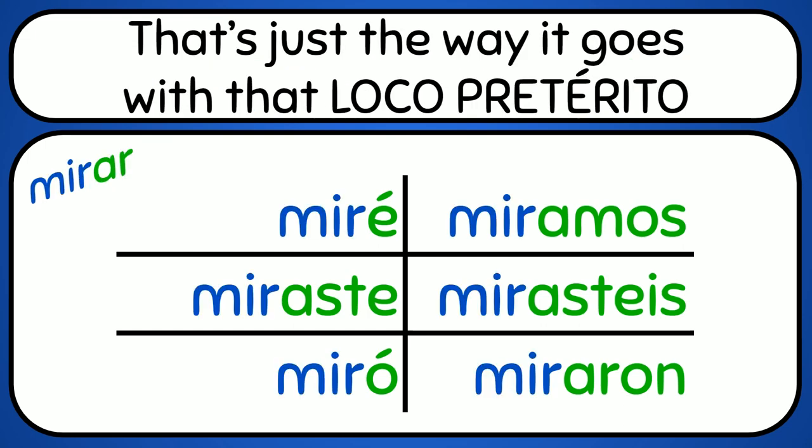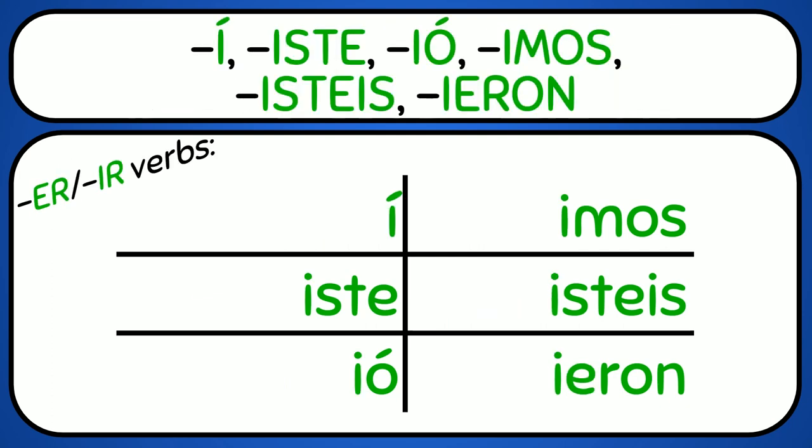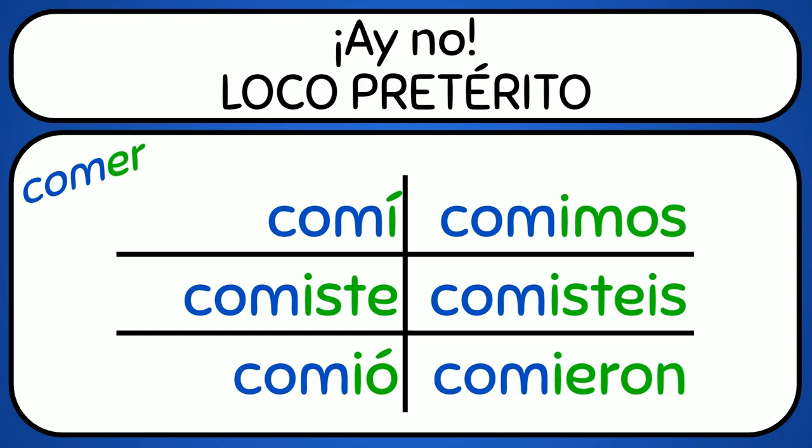That's just the way it goes with that loco preterito. É, aste, ó, amos, asteis, aron. Ay no! Loco preterito!